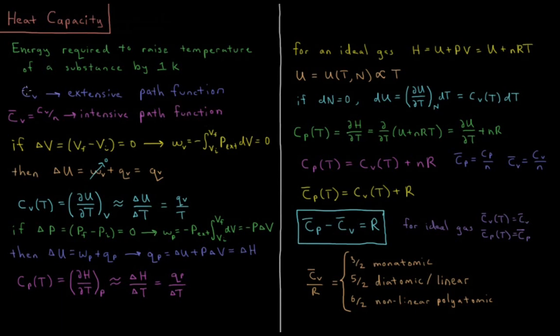Cv depends on the number of moles of our gas, or whatever system we have; Cv-bar does not. Extensive properties depend on the number of particles; intensive properties do not.